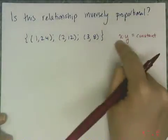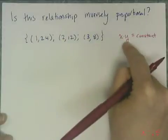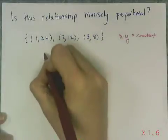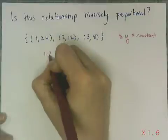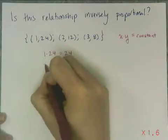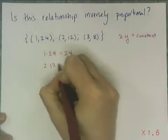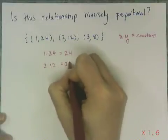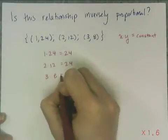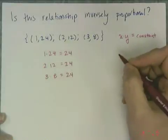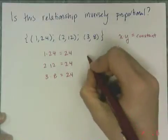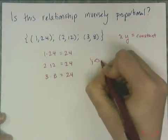What I do is take the x value and multiply it by the y value to see if I always get the same number. So 1 times 24 is 24, 2 times 12 is 24, and 3 times 8 is 24. So that means that yes, this is an inversely proportional relationship.